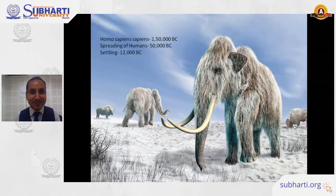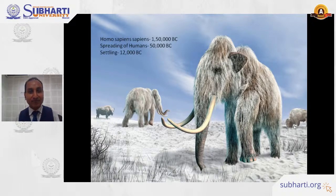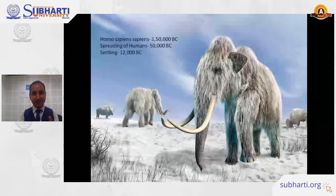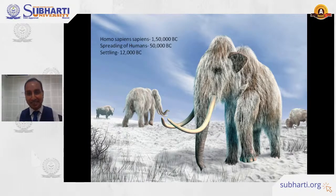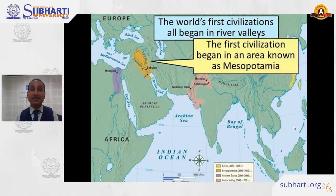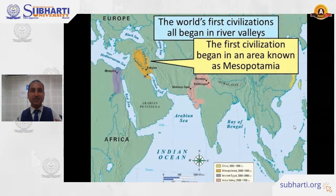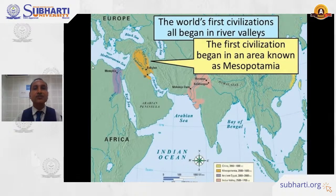The evolution of Homo sapiens has been traced back to around 150,000 BC. These humans started spreading from Africa to other parts of the world and began settling, not that long ago — just before 12,000 BC. They started settling in areas where rivers were present, where they could get fresh water.